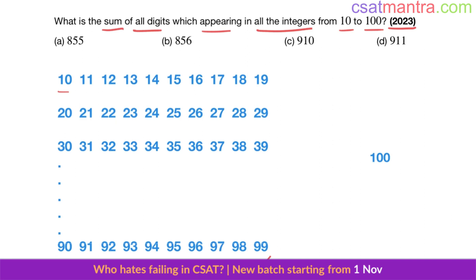Now see, from 10 to 99 we have two-digit numbers, 100 is a three-digit number. I split them like this: 10 to 19 one line, 20 to 29 another line, 30 to 39 another line, and so on to 90 to 99. There are 10 numbers in each line; there are nine lines.